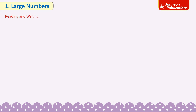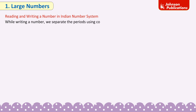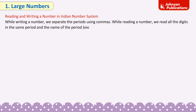Reading and writing a number in the Indian number system: While writing a number, we separate the periods using commas. While reading a number, we read all the digits in the same period and the name of the period, except the ones, together. Let us take the number 73 crore 45 lakh 39,186 as an example.